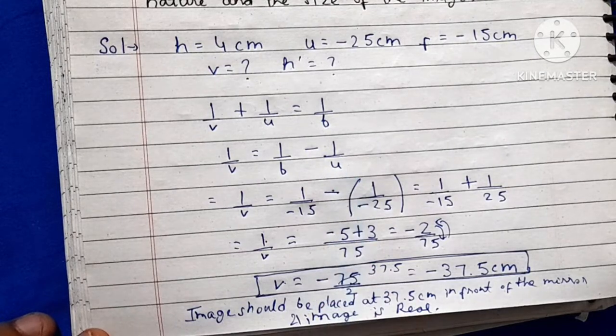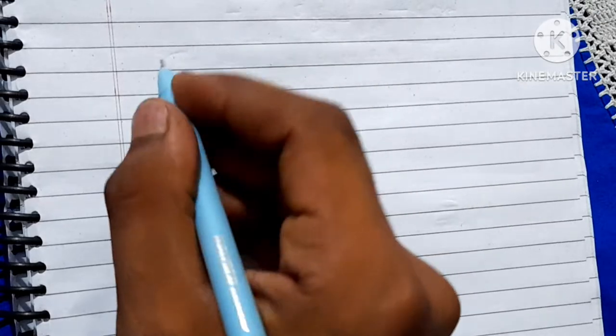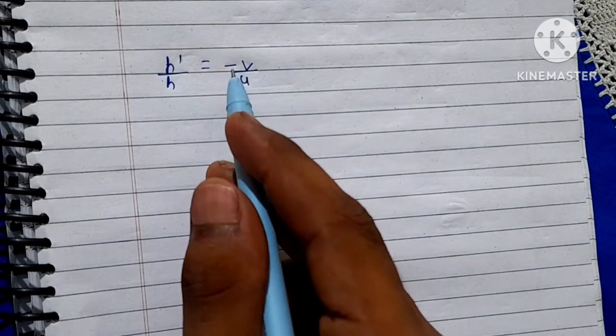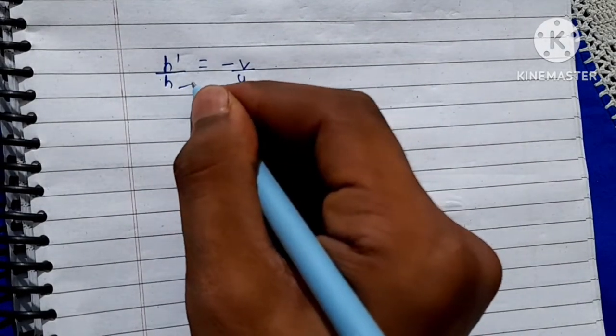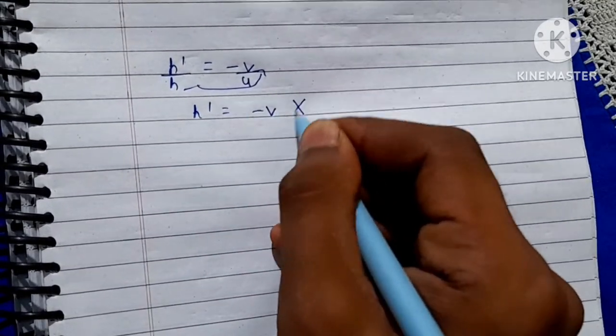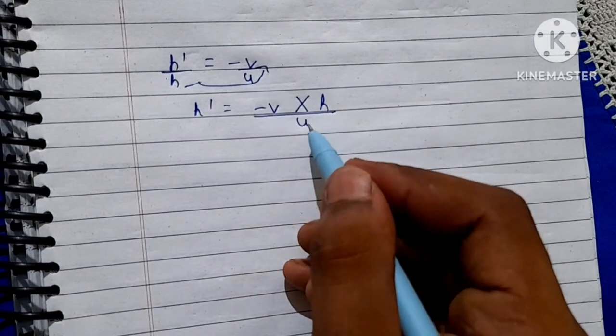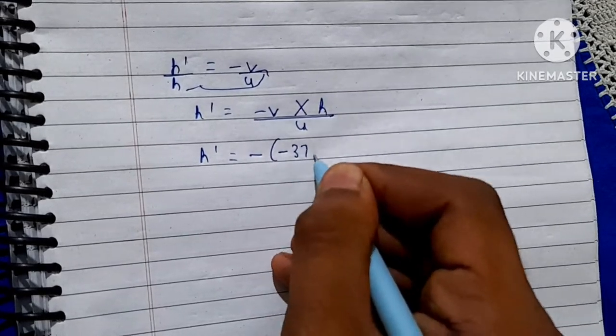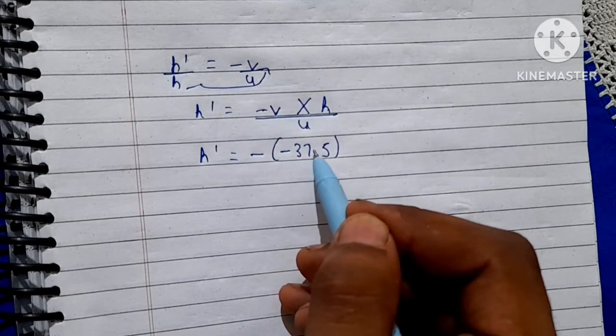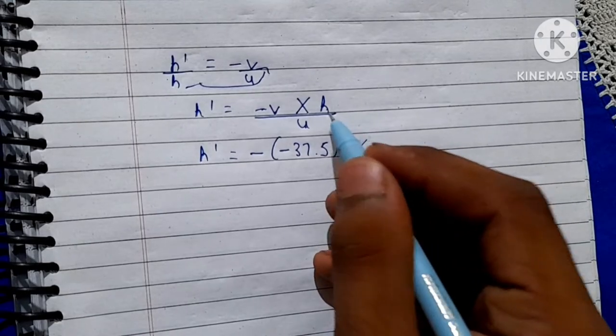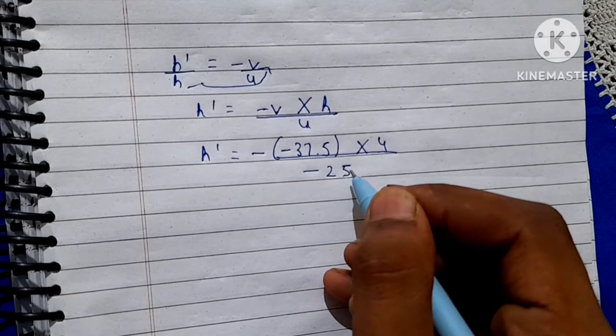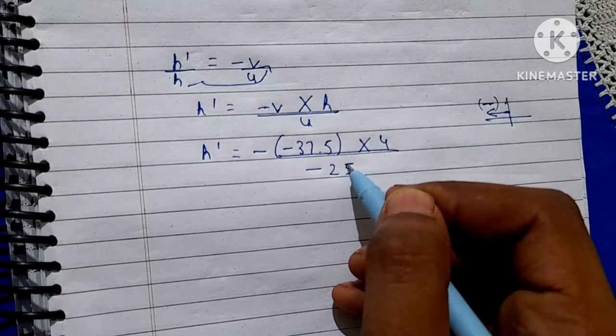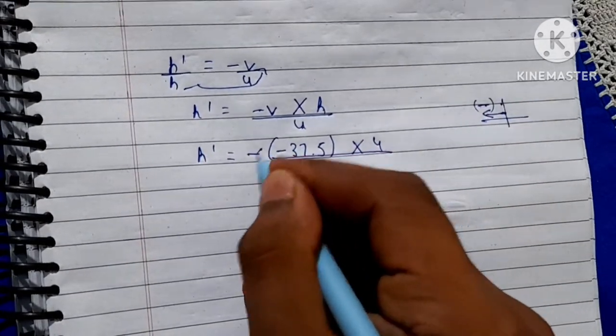Now we will find out h'. h' = -v/u in the mirror case. We can transpose and it becomes h' = (-v × h) / u. Now put the values: h' = (-(-37.5) × 4) / (-25). Because our object distance u and image distance v both are negative, we will cancel the signs.